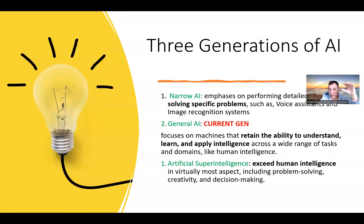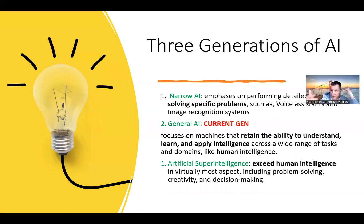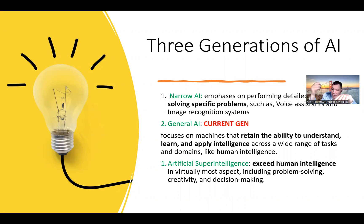There are three generations of AI. The first is narrow AI, which includes chatbots and robocalls. For example, if you have a credit card and try to ask about a transaction, somebody answers the phone — usually an answering machine. This is the first generation, called narrow AI, where you talk with a machine and it tries to help you. Also, if you do a live chat, an agent talks to you, but in fact it's just narrow AI.